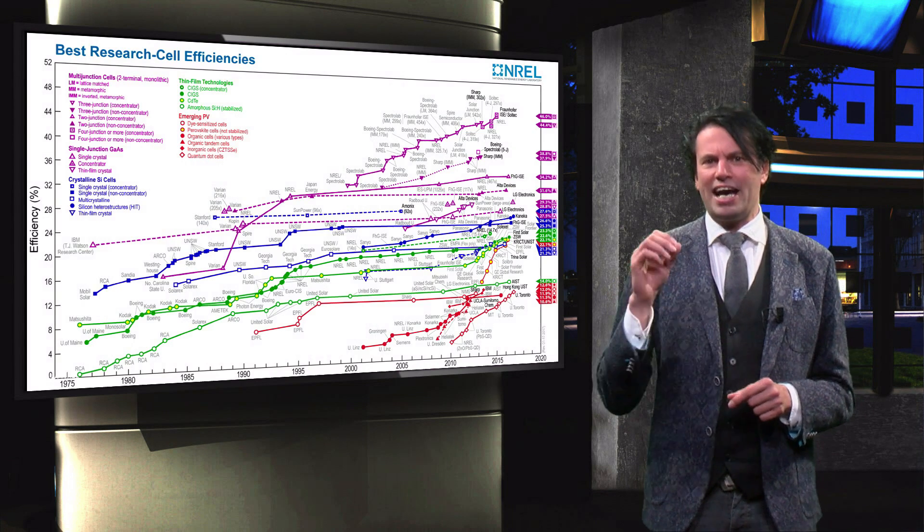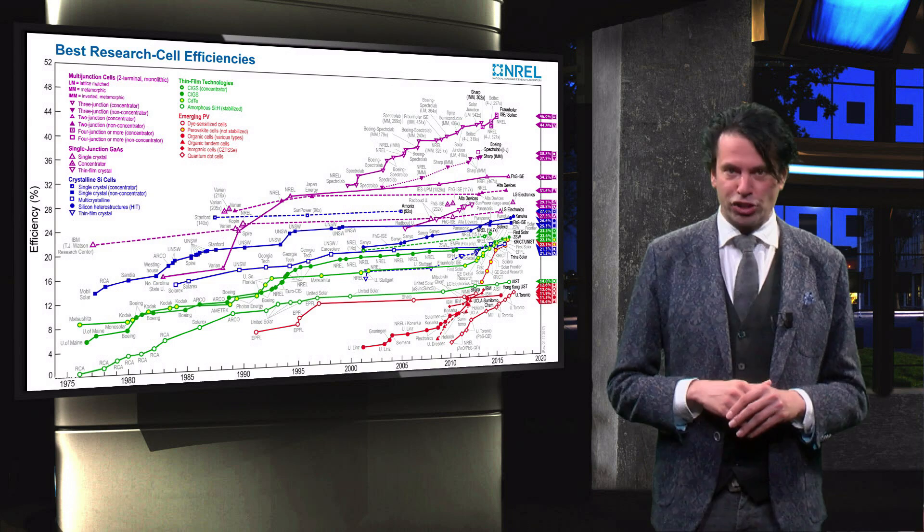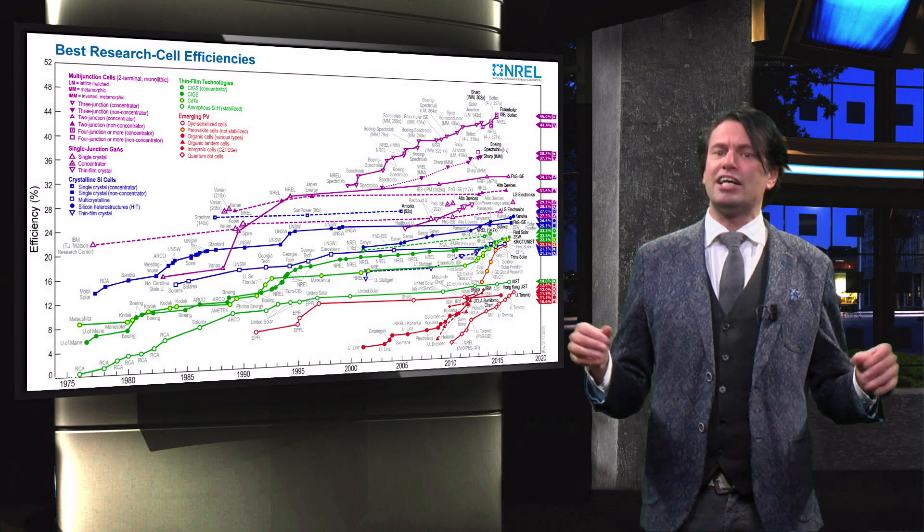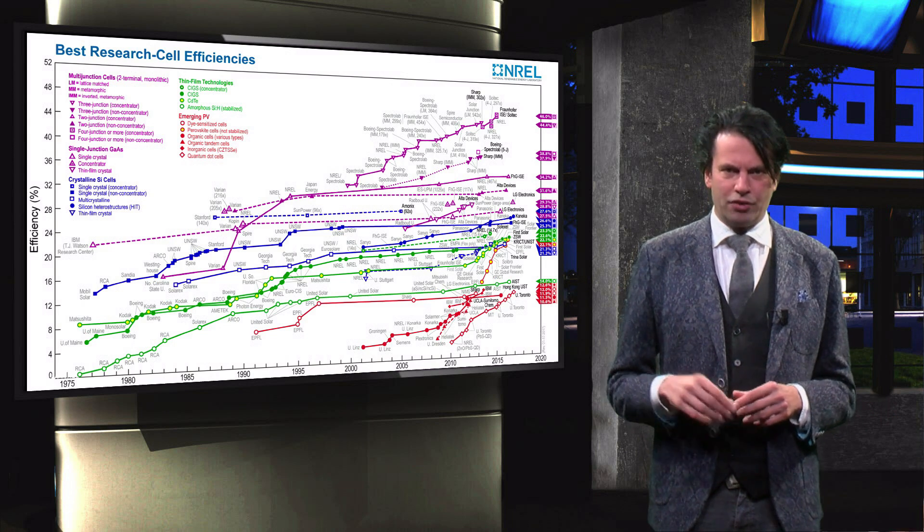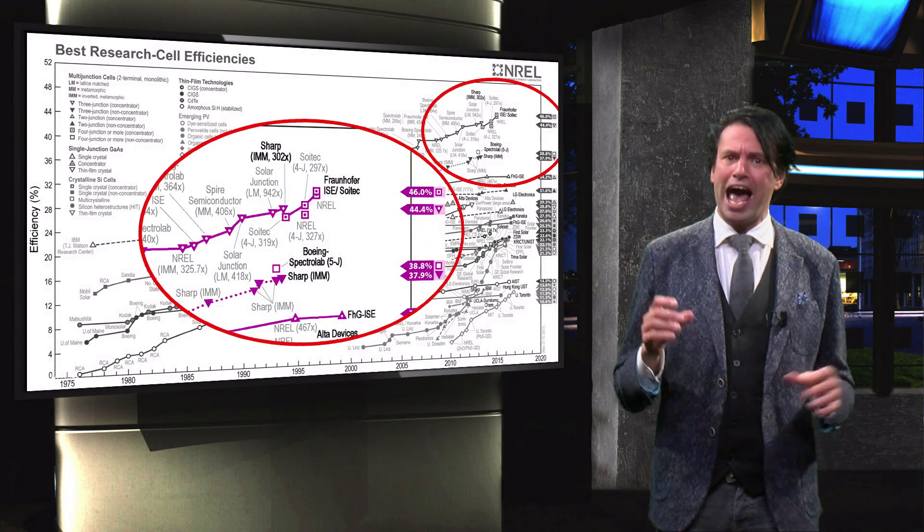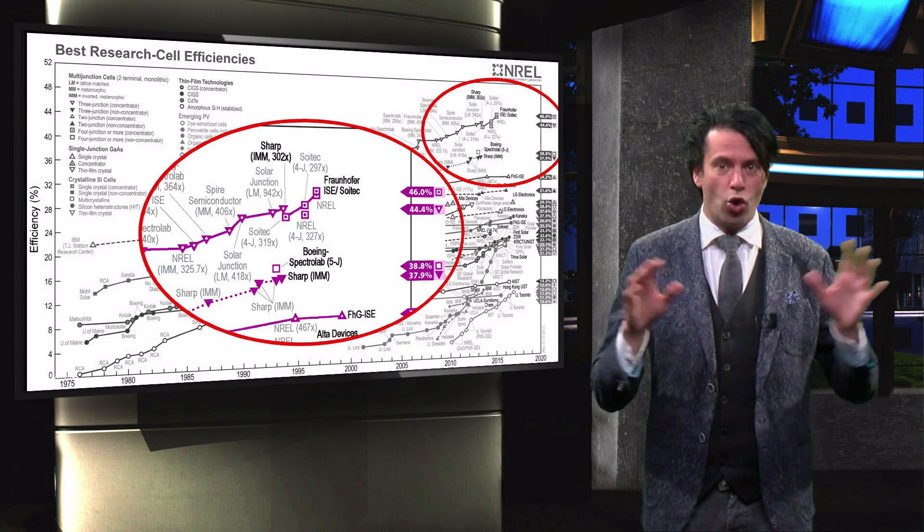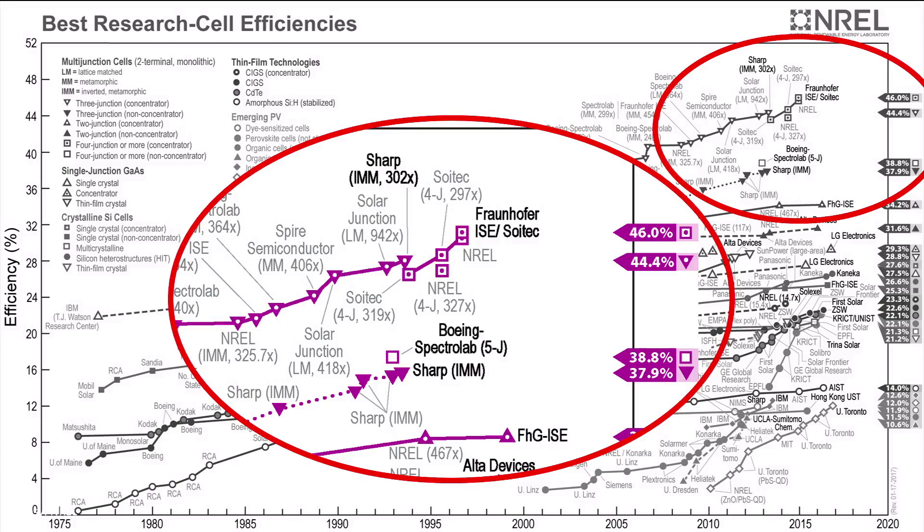We will begin with the NREL best research efficiency charts that we have seen at the start of this section. The 3-5 multijunctions have the highest efficiency of all available solar cell technologies. What you may not have noticed though, is that the efficiency of the 3-5 solar cells is even higher under concentrated light conditions.